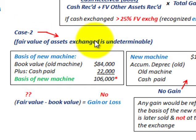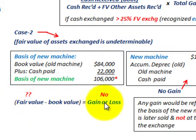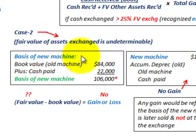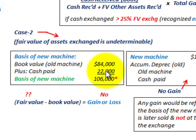Now let's look at case two, where the fair value of the assets exchanged is undeterminable. Going to our equation to compute the gain or loss on the transaction — since we don't know the fair value, even though we know the book value, there's not going to be any gain or loss recognized. To determine the basis of the new machine, we take the book value of the old machine ($84,000) plus the cash paid ($22,000), giving us a basis of $106,000 for the new machine.